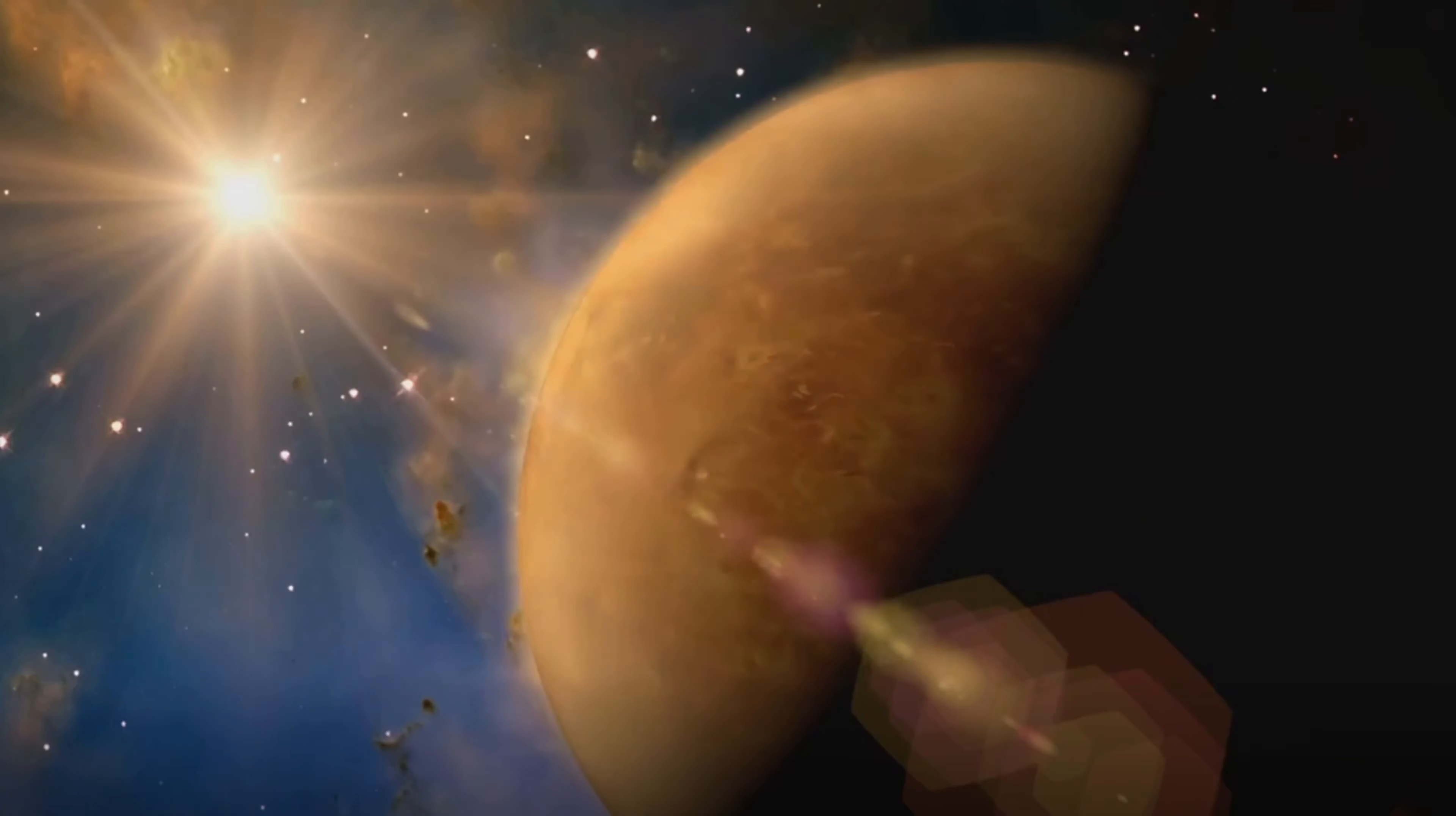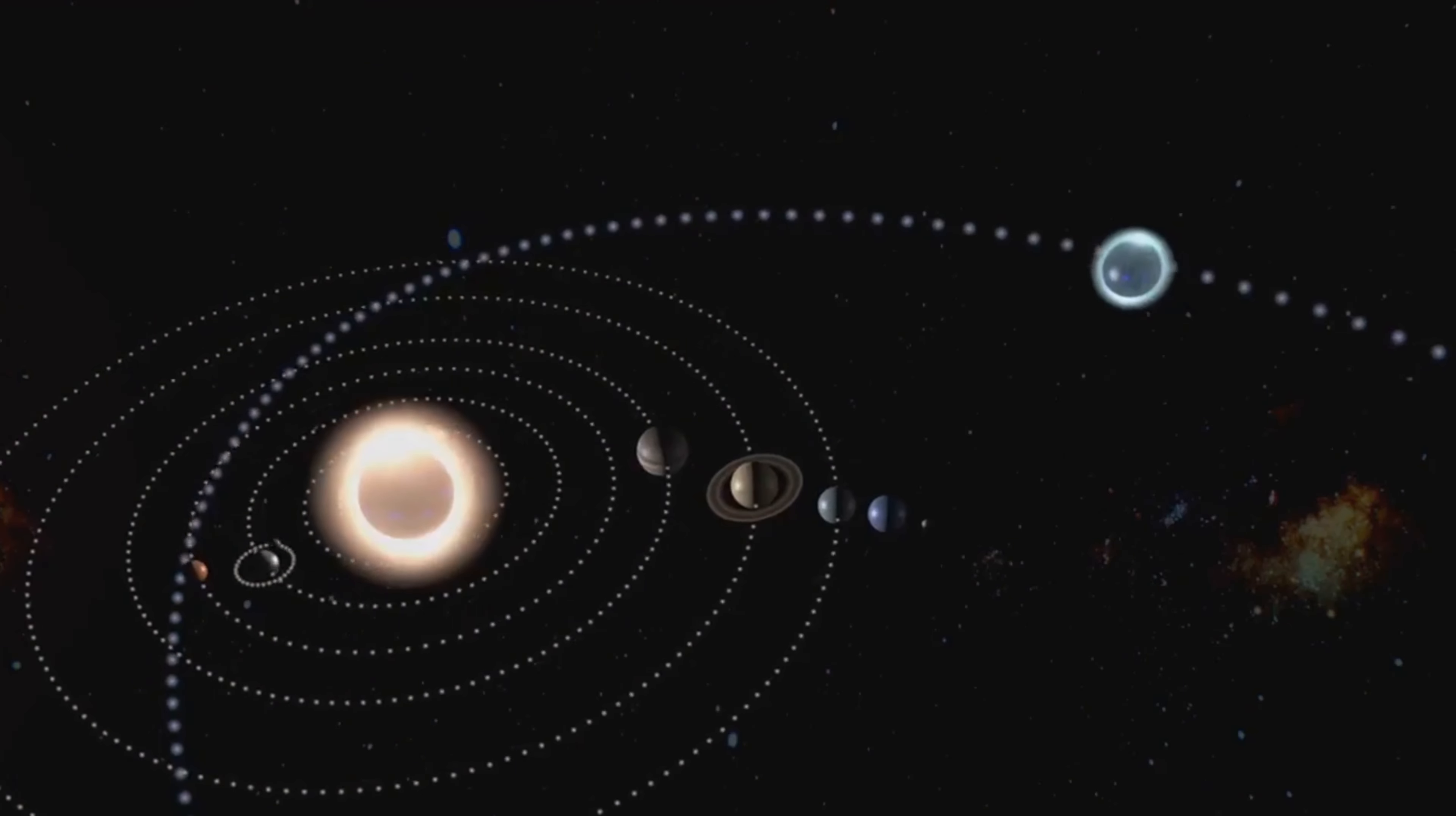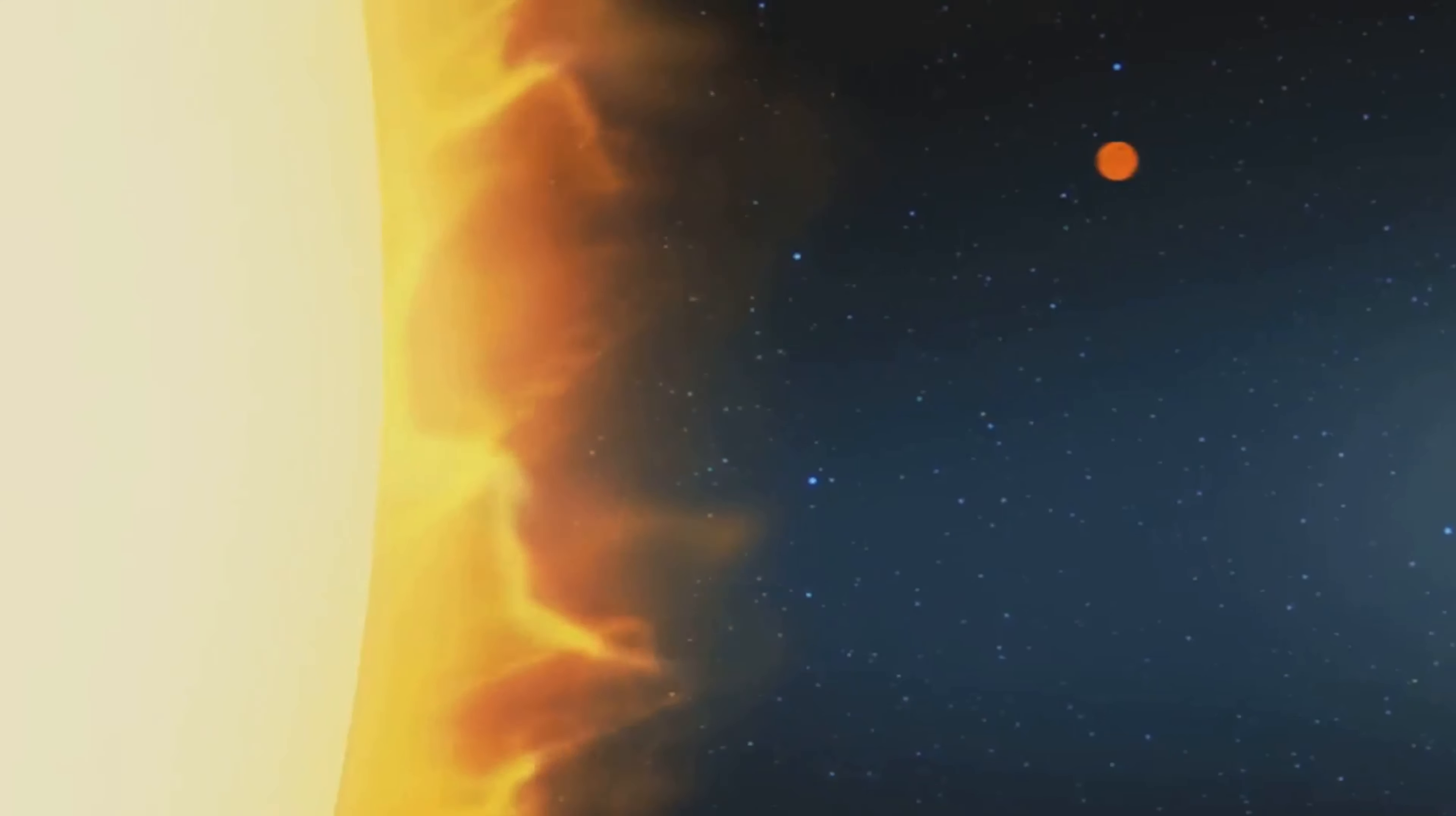Imagine a place where a day is longer than a year. Sounds impossible, right? Yet in our very own solar system, Venus defies this logic. With a day that spans 243 Earth days and a year merely 225, Venus truly dances to its own beat.